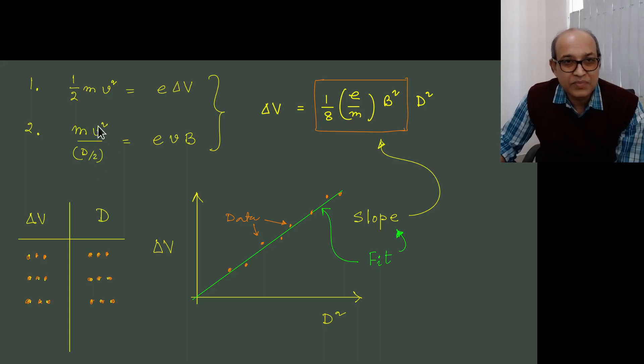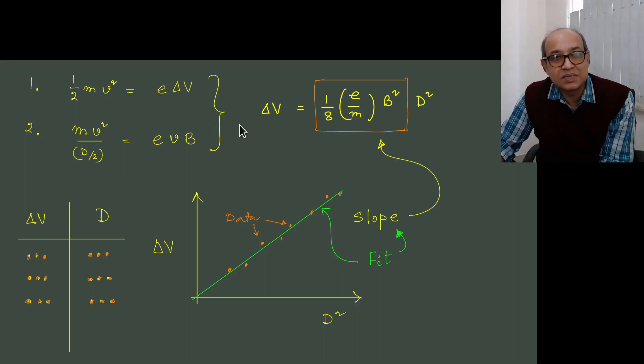Now d being the diameter, so we write here d by 2, and we equate the two quantities, the Lorentz force and centripetal force. After a little bit of algebra we can easily write delta V is equal to 1 by 8, E by m, d squared times B squared. Now this is our working principle.